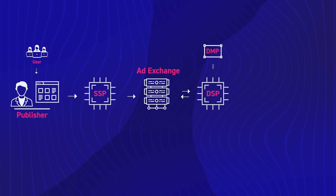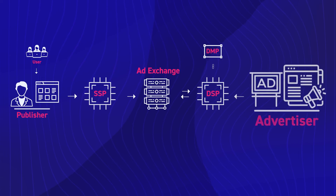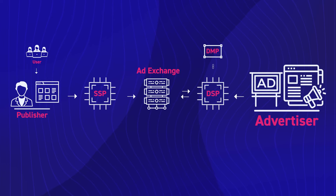The ad exchange receives bids from advertisers through DSPs and awards the impression to the advertiser with the highest bid. When an advertiser wins an impression, the publisher renders the advertiser's creative on their website. All of this happens in milliseconds before the page loads and the content is displayed to the user.